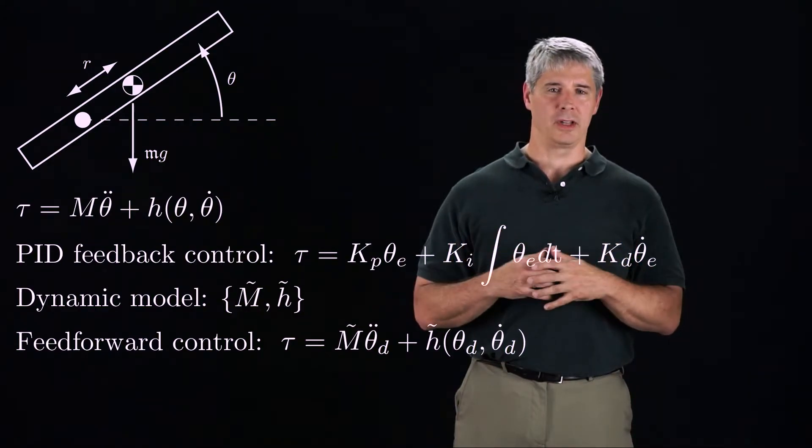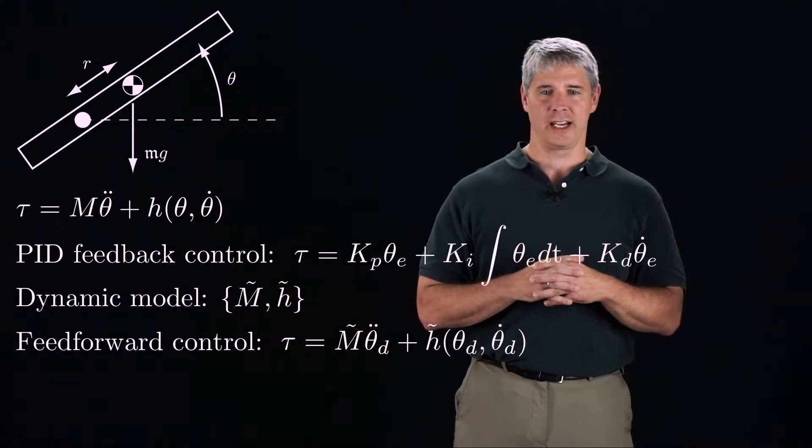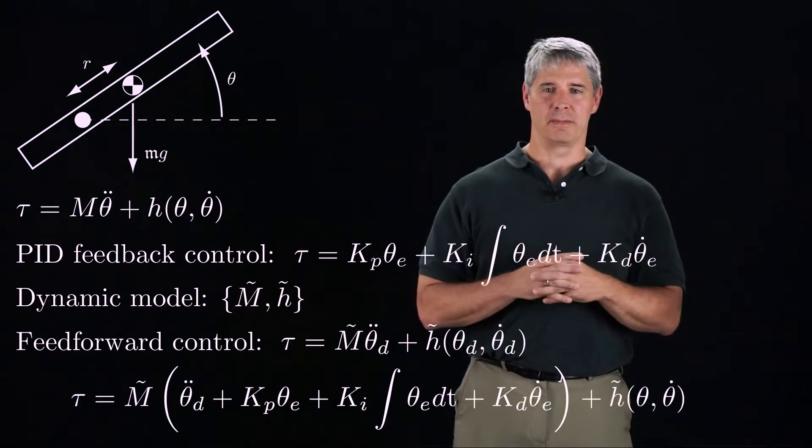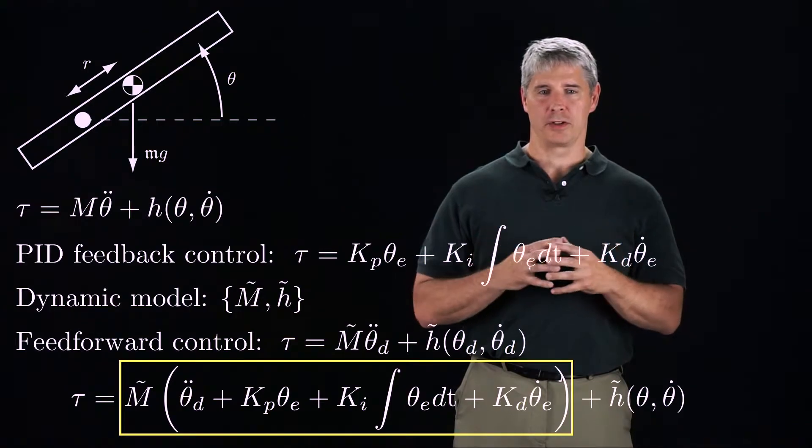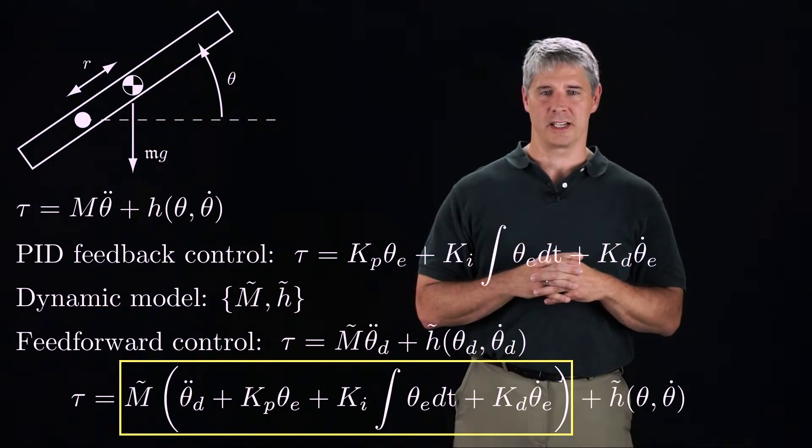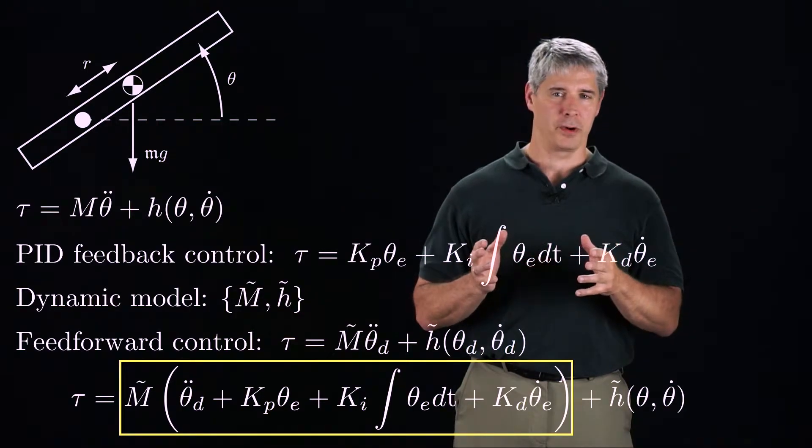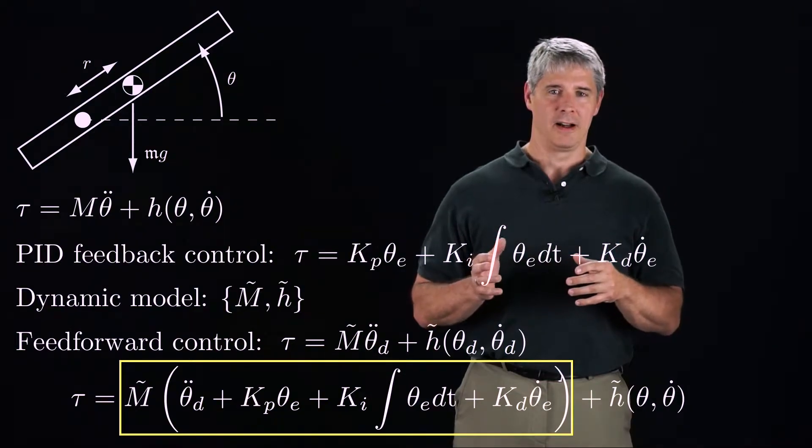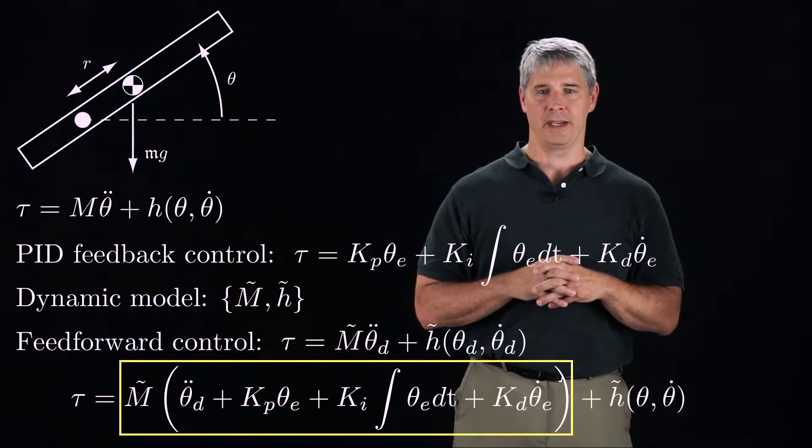Let's consider a control law that combines the benefits of a good dynamic model and the stabilization of the PID controller. Here's one possibility. The first term of the control law is M tilde times an acceleration, which is the sum of the feedforward acceleration at this time instant, plus an acceleration generated by a PID controller.